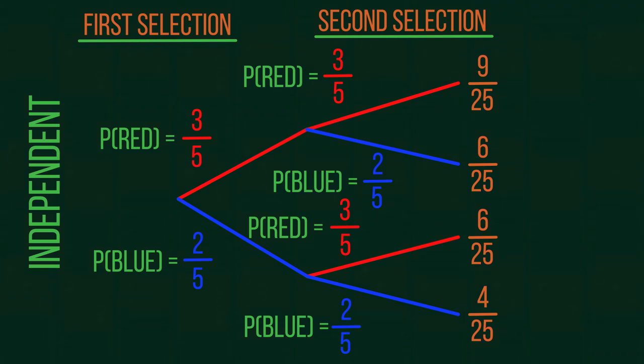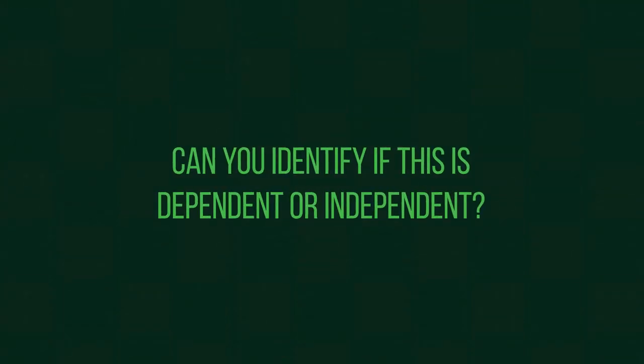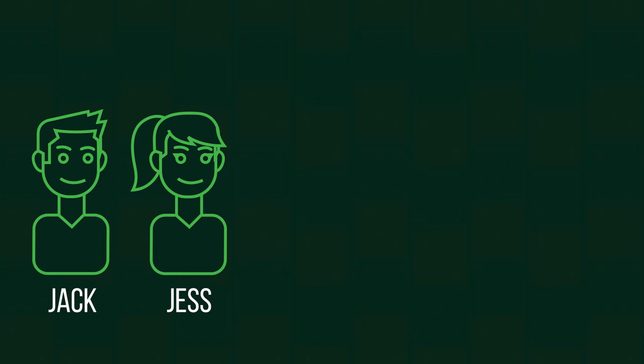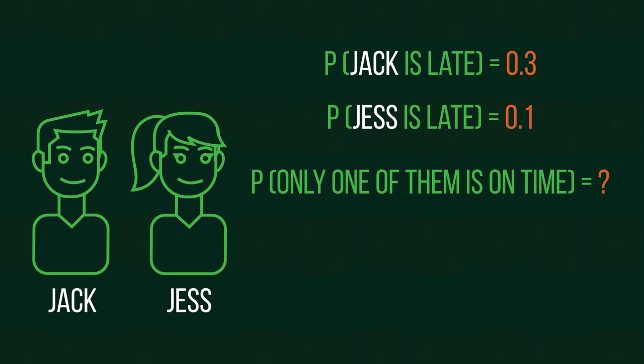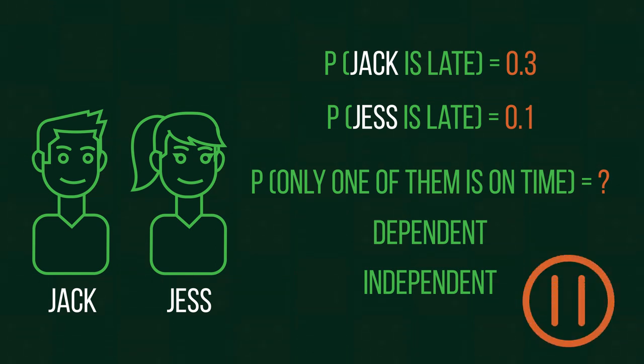Let's start by looking at a tree diagram question. See if you can identify if it's dependent or independent. Jack and Jess are both going to work. The probability that Jack will be late is 0.3. The probability that Jess will be late is 0.1. What's the probability that only one of them is on time? Is the question dependent or independent? Pause and see if you can figure out which.